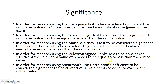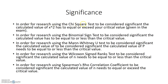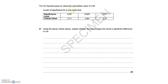In order for research using Spearman's Rho correlation coefficient to be considered significant, the calculated value of n needs to be equal to or exceed the critical value. Here's a quick example from a specimen paper. The chi-squared gave an observed calculated value of 3.80, and we have a table with critical values. Because the calculated value of x-squared has to equal or exceed the critical value in a chi-squared test, we can see it is significant at the 0.05 level — so p is less than or equal to 0.05 — but it doesn't exceed the next value, so it is only significant at that level.